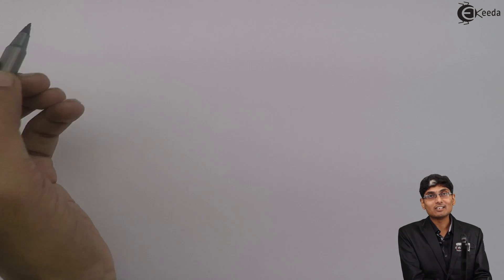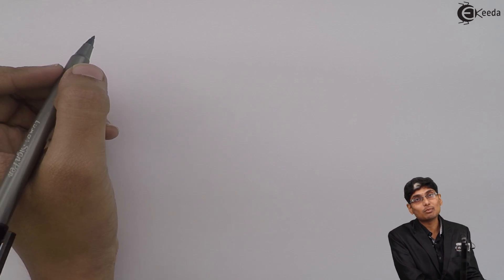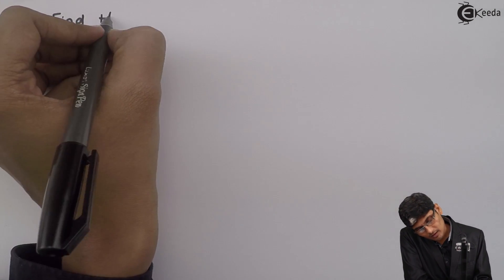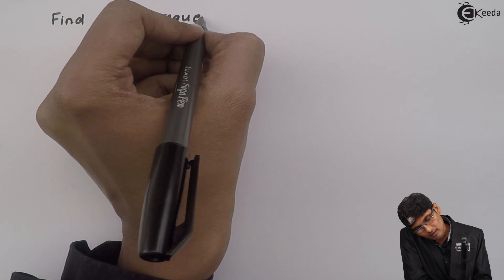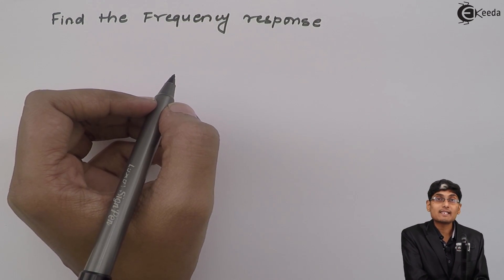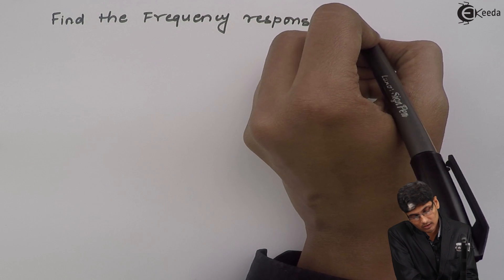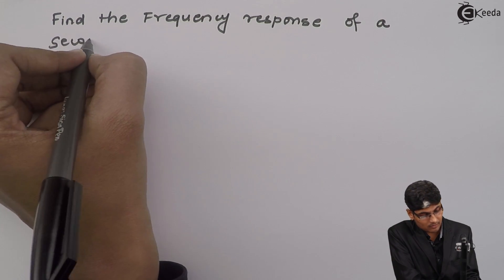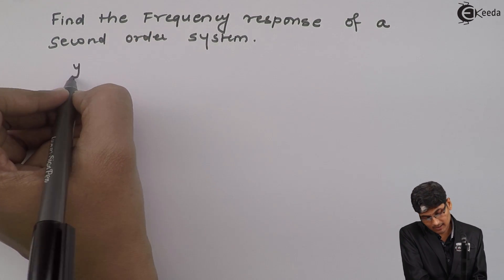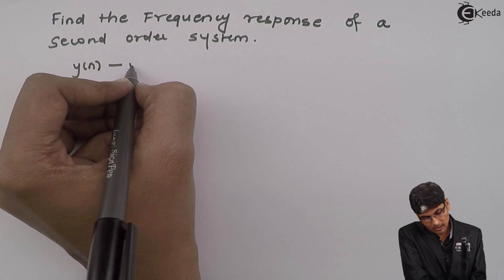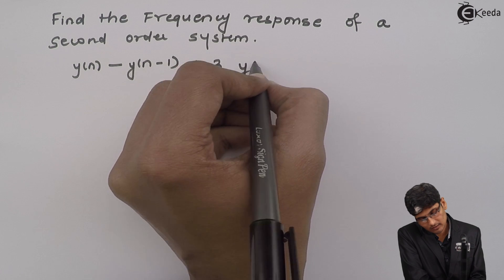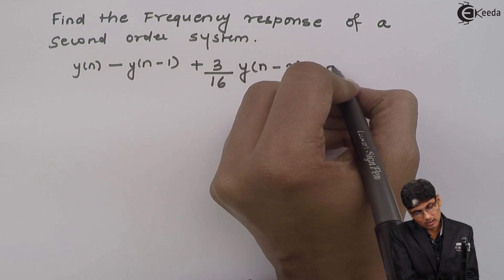Let us see a problem on frequency response. The problem says: find the frequency response of a second order system whose difference equation is given as y(n) - y(n-1) + (3/16)y(n-2) equals...